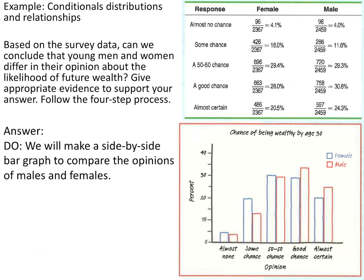At the 50-50 response, they're almost identical at 29.4% and 29.3%. At a good chance, the men start getting higher, and for almost certain, the males' bar graph is also higher. On the do step, this is where you do those calculations and make the graph.